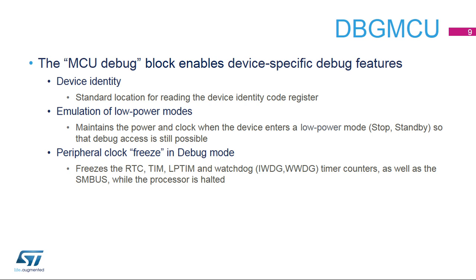The DBGMCU is located on the debug APB bus and can be accessed by the debugger via the APB access port AP2. It is also accessible by the processor in the debug APB address space. The DBGID code register provides the device ID and revision codes in STM32 standard format, accessible by the software debug port or by the user software.